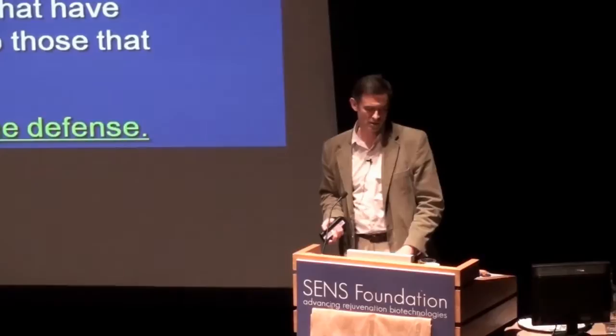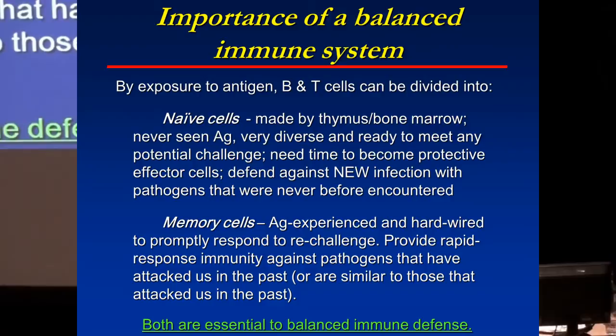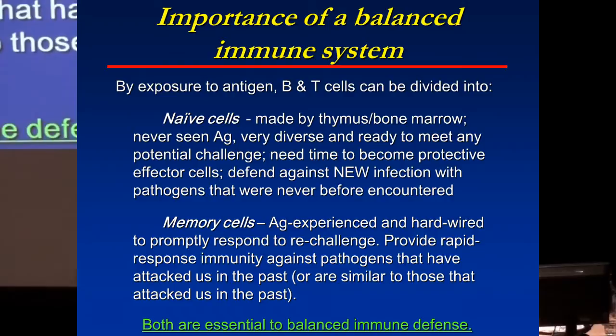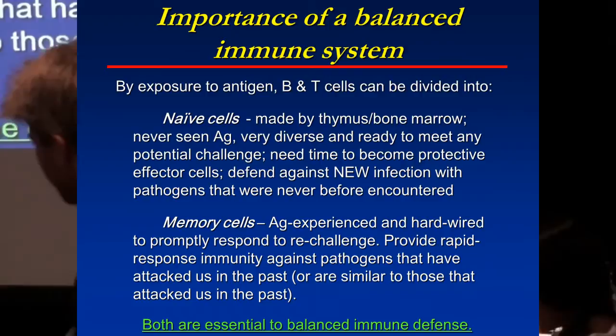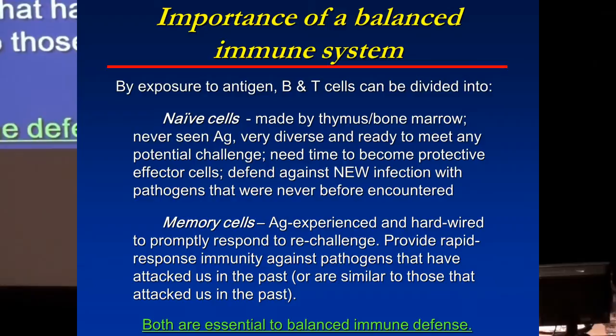Memory cells, by contrast, arose from naive cells when they meet antigen. Naive cells differentiate, get hardwired differently, get armed. Whereas most die off after you eliminate an acute infection, some survive for very long periods, assuming stem cell-like characteristics, maintaining themselves and very rapidly reacting to bugs we have seen before or bugs similar to ones we have seen before. They provide rapid response recall immunity. For our immune systems to work well, we need balance between these two — both are essential for immune defense.